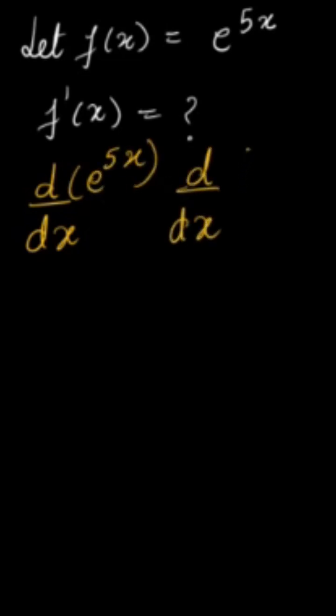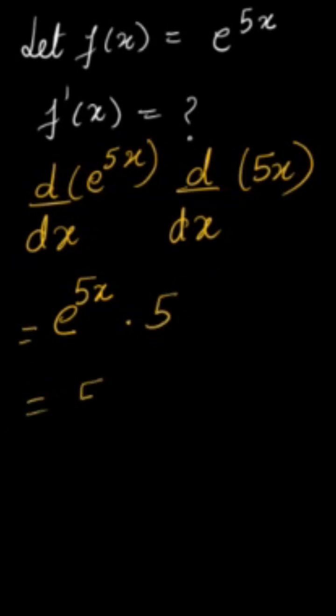We will write it d by dx of e raised to power 5x, then again d by dx of 5x. So differentiation of e raised to power x is e raised to power x. Same thing. So e raised to power 5x is there, so I have to write it same. Then differentiation of 5x is 5. So its answer is 5 times e raised to power 5x.